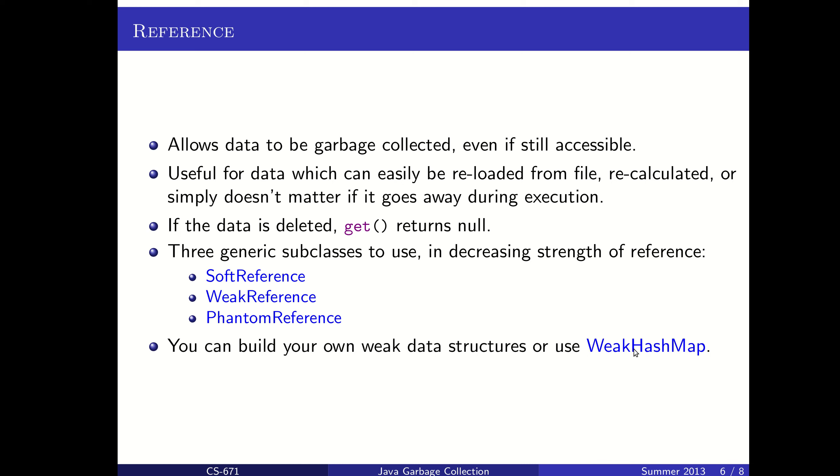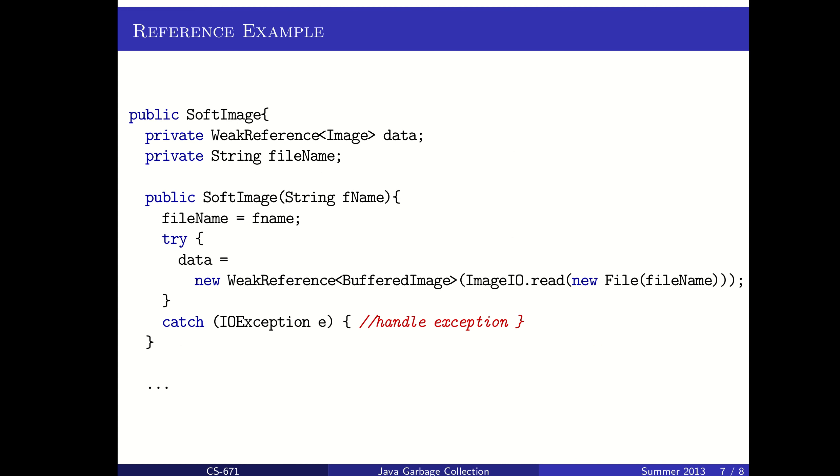So if you had user records that you were loading in and they were large and if they hadn't been used for a while or if memory really needed cleared up then fine, you can delete them. It's not a big deal. You could load them back in from the database or from a file or something like that. Then you might create a weak hash map of those user records and be able to just say, you know, if I don't get it back that's fine. I know where the file is. I'll have the program look it up there.